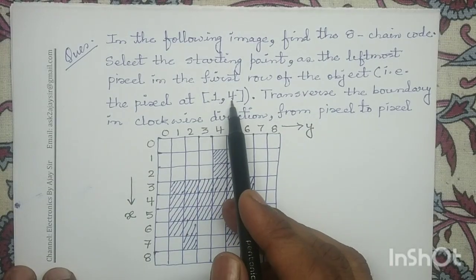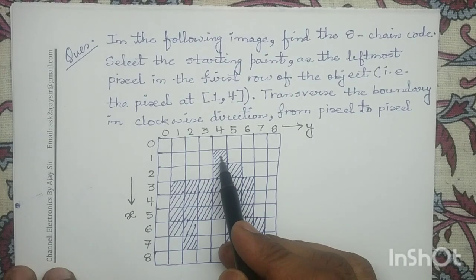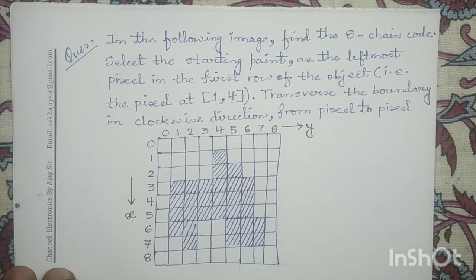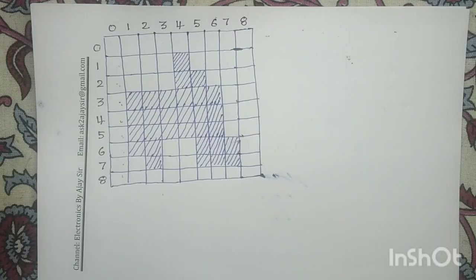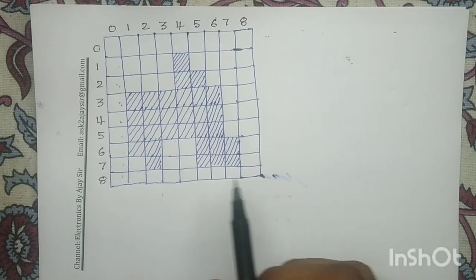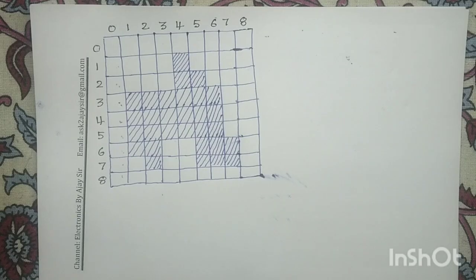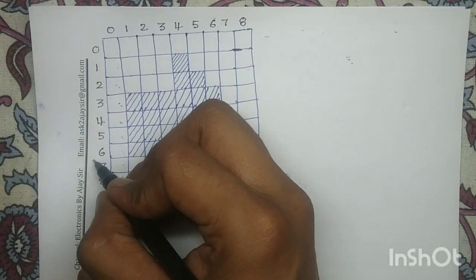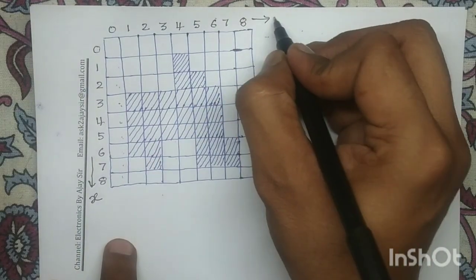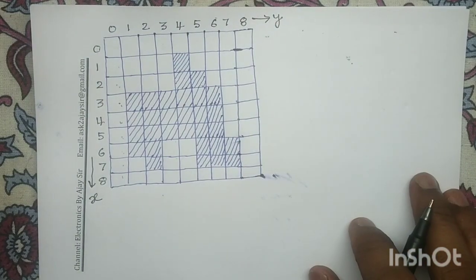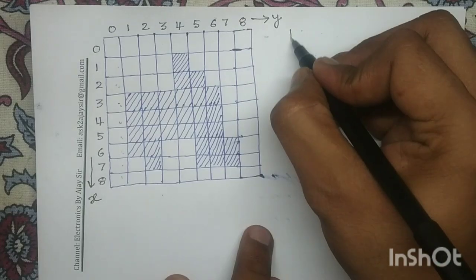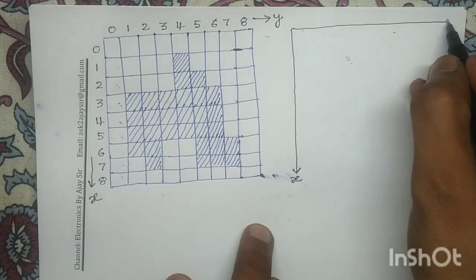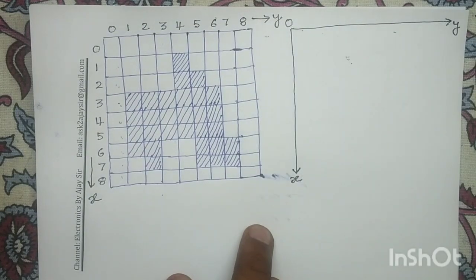Our starting point is 1,4. So 1,4 is representing this pixel. This is my positive x-direction and this is my positive y-direction. In order to write the chain code of this object, the boundary of this object we have to represent in point format. So this was our positive x-direction and this was our positive y-direction. Let me draw a graph. This is our positive x-direction and this is our positive y-direction and this is our origin.